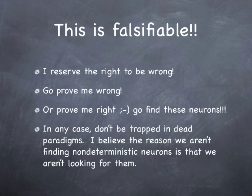This is a falsifiable hypothesis. I reserve the right to be wrong on this one. And if you want to, go prove me wrong. Please do. Or prove me right. Go find these neurons. But in any case, I think the reason we aren't finding these solutions is because we're just not looking for them. We're just under the control of this paradigm, which is just, it's trapped progress. The reason we're not finding non-deterministic neurons is we're just not looking for them. So I think if we go look for them, I think we'll actually find them.